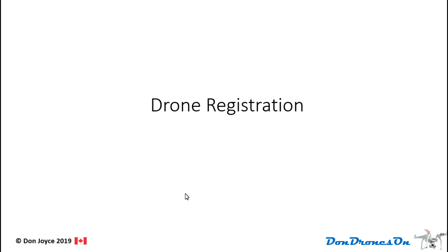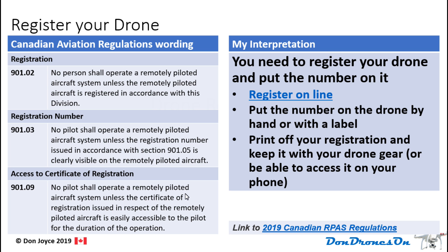Let's get started with drone registration. This is how this module will work for all subsequent training modules. You'll see the actual wording from each regulation on the left-hand side of each page — these are the Canadian Aviation Regulations. For each one you'll see the number, for example 90102, the title (registration in this case), and the actual verbatim rules from the regulation.